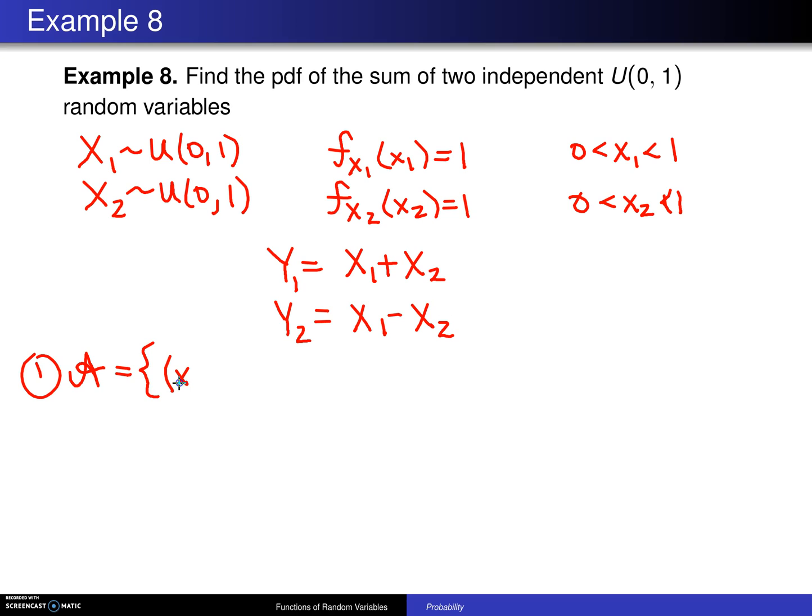Script A will be the values of definition for the random variables x1, x2. You can see that they are defined on the unit square, so this will be such that 0 is less than x1 is less than 1, and 0 is less than x2 is less than 1. So there is script A.